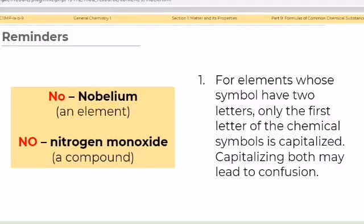Some reminders in writing chemical formulas. First, for elements whose symbol has two letters, only the first letter of the chemical symbol is capitalized. Capitalizing both may lead to confusion. For instance, the symbol NO, with O being a small letter, pertains to nobelium, which is an element. When O is capitalized, the symbol might mistakenly represent the formula of nitrogen monoxide, which is a compound.